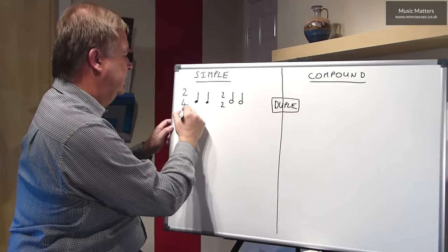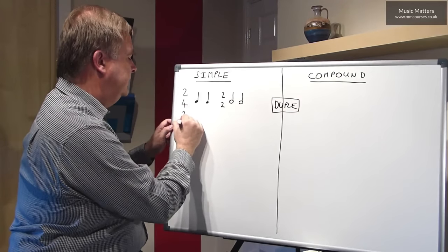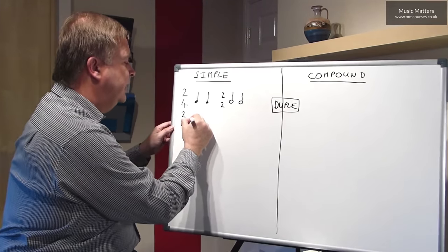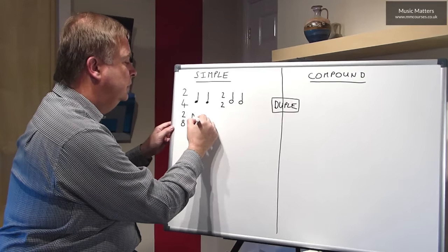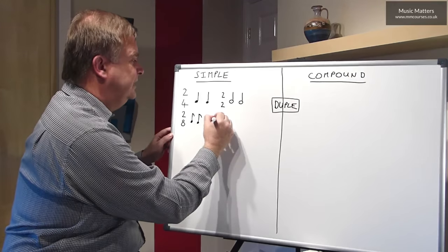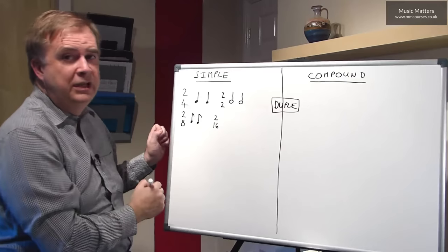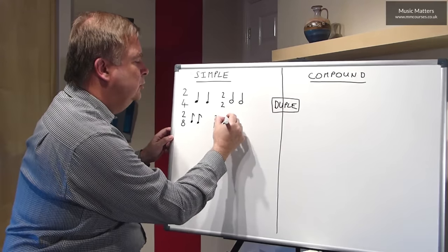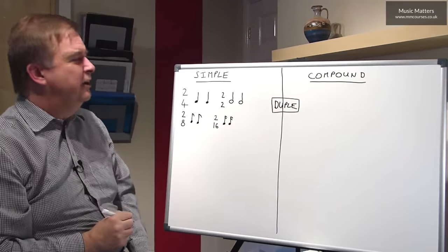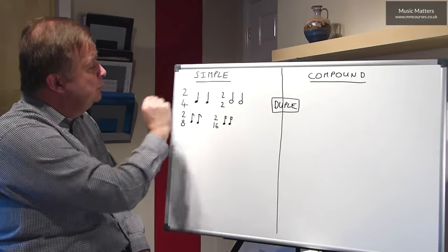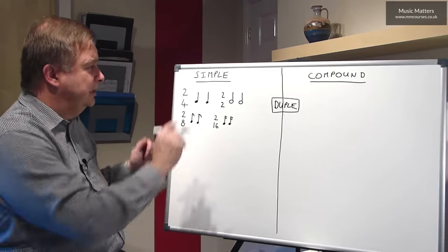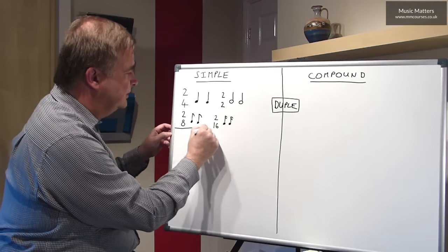I could theoretically have something like two-eight. It's not a very common time signature, but two-eight would be telling me that there are two quaver beats in a bar. I could even have two-sixteen, which may seem slightly crazy, but that would mean that there are two semi-quaver beats in a bar. As you can imagine, that's far less likely. So you're much more likely to meet two-four or two-two than you are to meet something like two-eight or two-sixteen. But they're all theoretical possibilities at least.